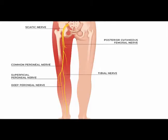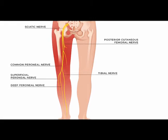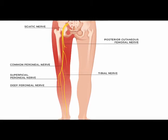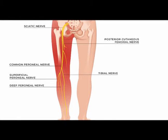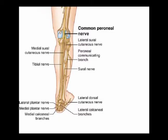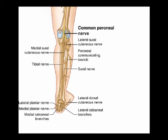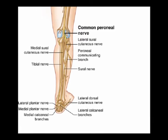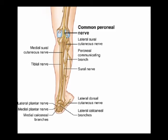The sciatic nerve, which is the largest nerve in the body, bifurcates into two separate nerves. One of those nerves is the tibial nerve and the other nerve is the common peroneal nerve. The common peroneal nerve then separates into the deep and superficial peroneal nerves.